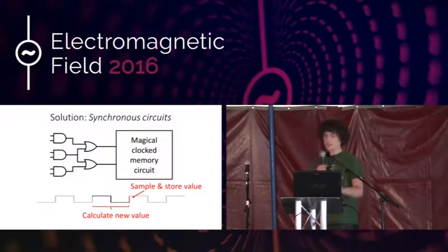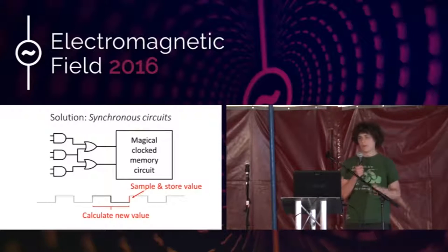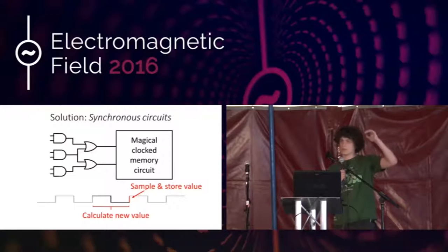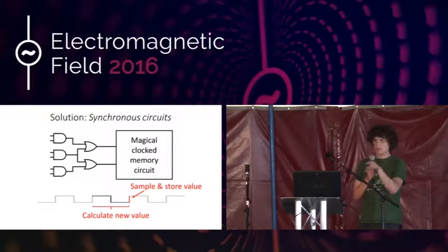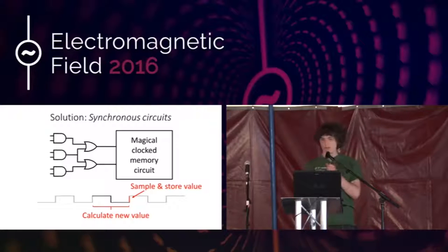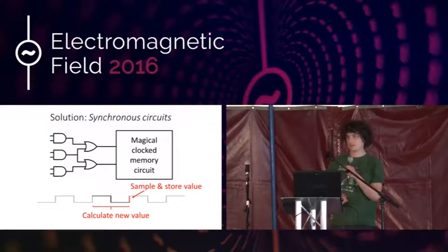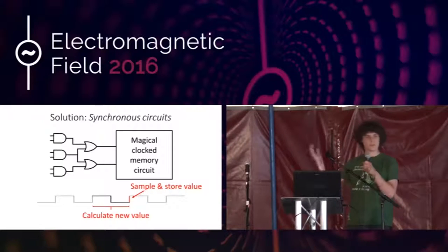The solution is synchronous circuits. What we do is take our logic gates, and after them put a magical clock memory circuit. This memory circuit listens to a special signal called the clock, and only when the clock says 'now you should copy what's on your input and remember it' does it do so. Typically the clock signal is an oscillating signal. We say whenever the clock goes from 0 to 1 — the rising edge — our memory circuits should copy the value at their input to the output. During the other half of the cycle, we give the logic circuit time to process its input and let values settle. We've solved spikes and oscillations theoretically — now we need to build the magical circuit.